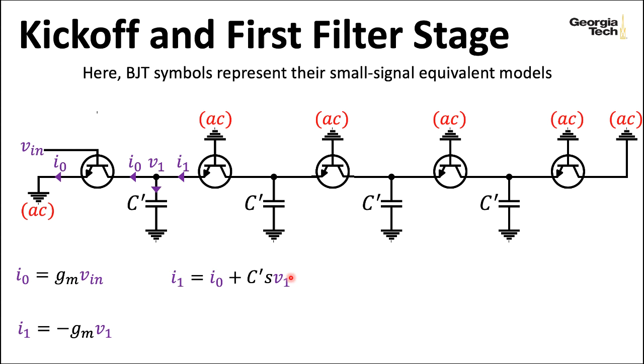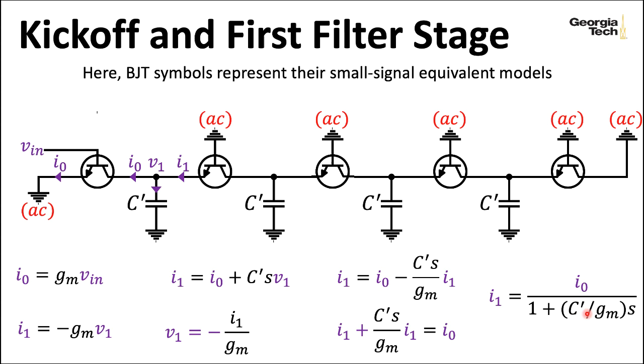Then I wind up with an expression relating I1 and I0. I would like to get I1 over to the other side. So I'll go ahead and move this term over here. Then I can factor out I1 and divide it out and wind up with this nice formula. So I've got I1 is equal to I0 over 1 plus a constant times S, where this constant has a C prime and the transconductance gain in it. So this is great. This is now looking like a first order low pass filter function operating in sort of a current domain.